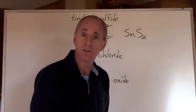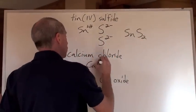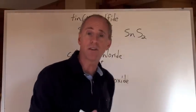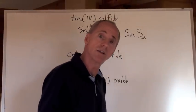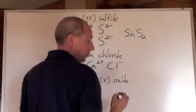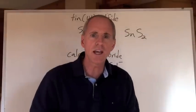Calcium chloride. Calcium is Ca with a 2+ charge. It doesn't have another one, it's just calcium ion 2+. You can check the chart to make sure. Chloride is -1.